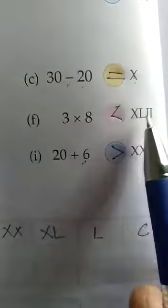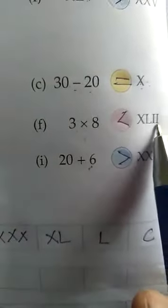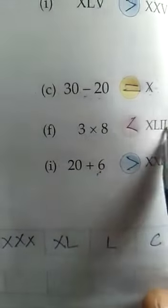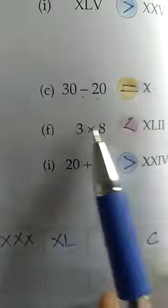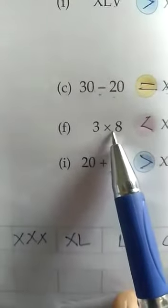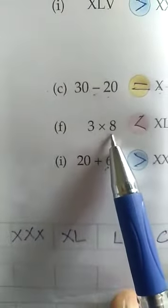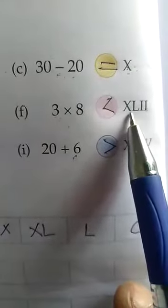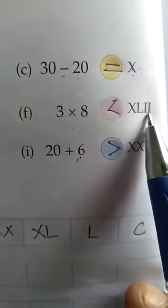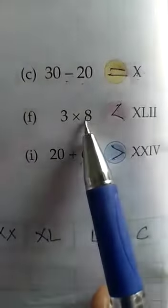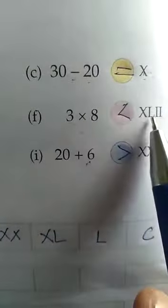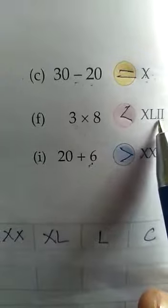Now we will do question number F: 3 multiplied by 8 and XLII. We will compare these numbers. When we solve 3 multiplied by 8, that is 24, and XLII is 42. So 24 is smaller than 42, so this sign will come here.